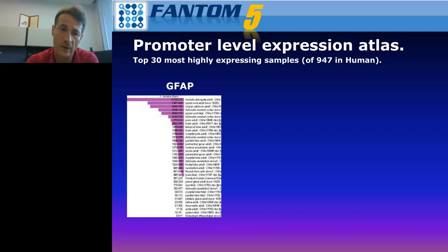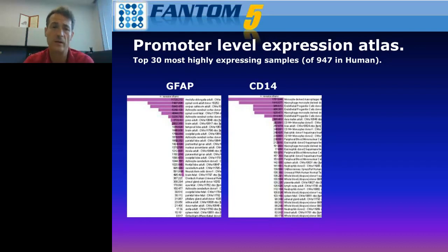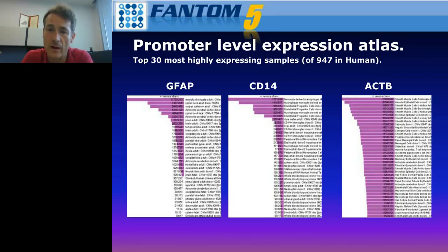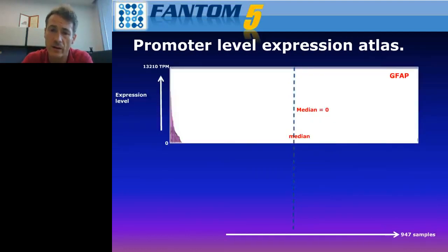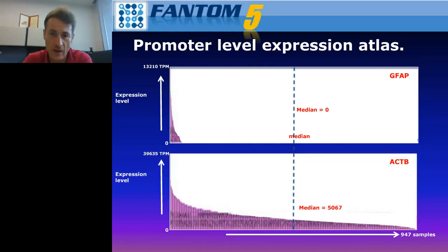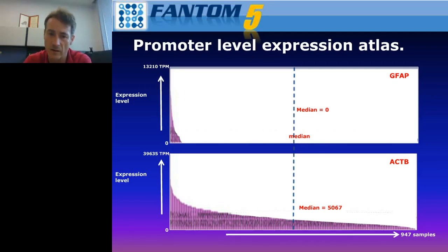Some of the transcripts are very specific — for example, glial fibrillary acidic protein is a brain-specific, glial-specific transcript. We see that only a few of the 947 libraries express this protein. Other genes are expressed at a somewhat higher level, like CD14, with a larger number of libraries expressing them. But we also have others like actin-beta, which is expressed essentially everywhere — if you scroll through, almost all the tissues and all the libraries express actin-beta. We can plot this graph horizontally and see the distribution through all 947 samples. The glial fibrillary acidic protein has a median expression of zero because less than half of the tissues express it, whereas actin-beta shows a median expression of about 5,000 transcripts per million and is expressed in essentially all libraries.